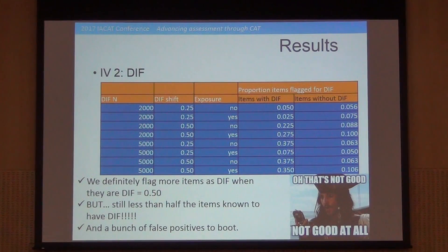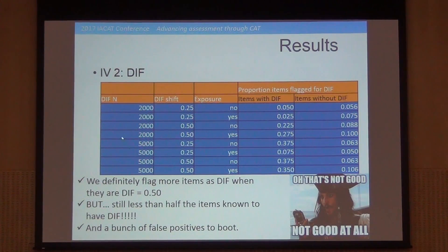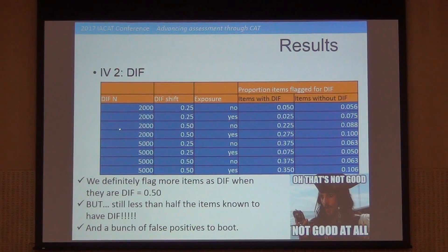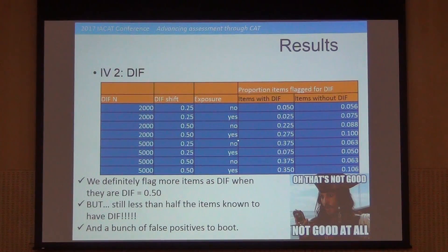The second research question was looking for differential item functioning. Like I said earlier, there were eight different cases here, crossing the sample size with DIF conditions — including the minority group proportion, the smallest subgroup size, how big the DIF shift is, and what the item exposure control setting is.